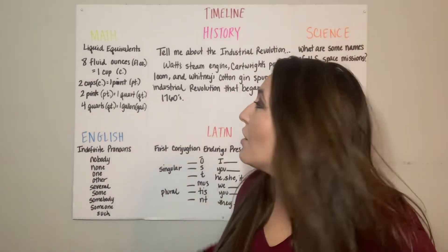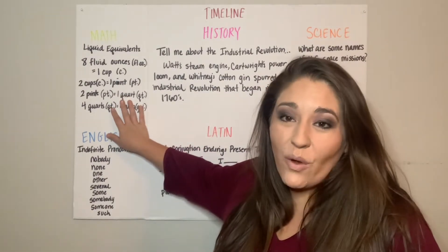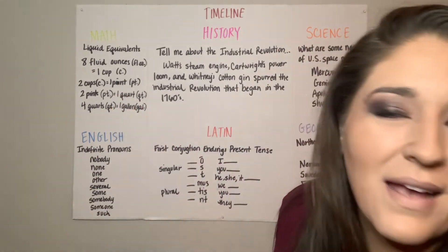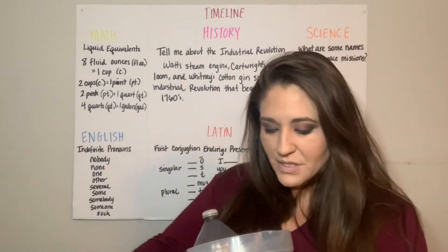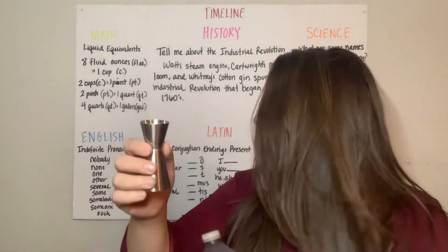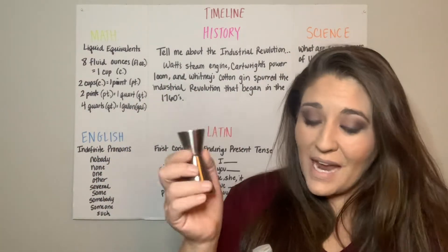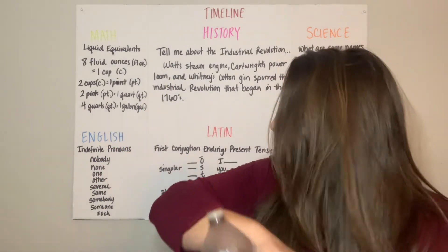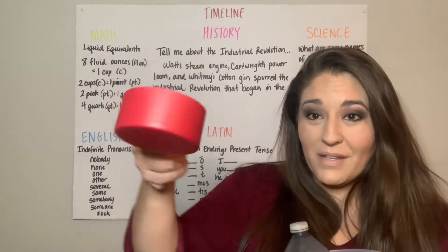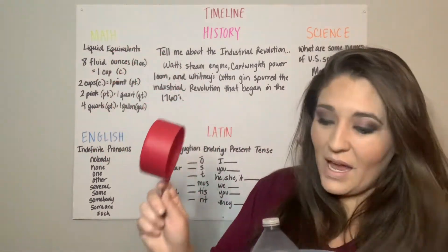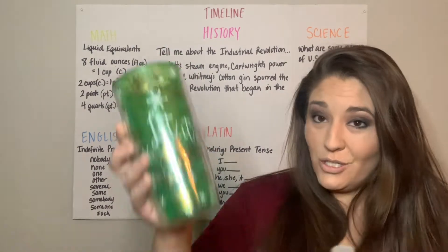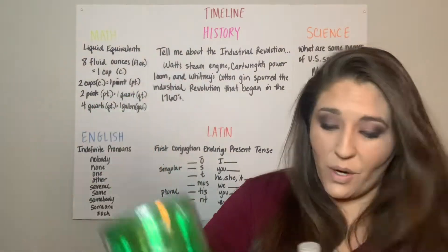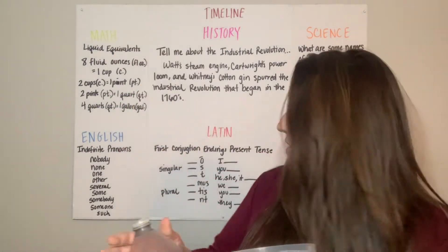We started off with math and did liquid equivalence. I brought into class all of those measurements. I started off by showing the boys and girls that this was one fluid ounce and that there are eight of them that equal one cup. Two cups equals one pint, two pints equals one quart, and four quarts equals one gallon.